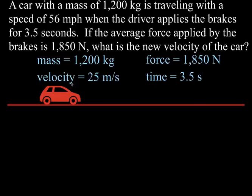So here we have a car and its mass is 1,200 kg and we'll just say it's traveling to the right with an initial velocity of 25 meters per second.